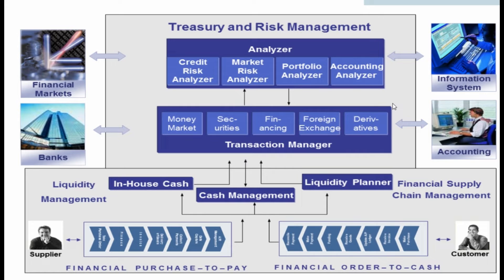From the result database we can generate reports in the Analyzer Information System, called AIS, which displays key figures. We can set up portfolio hierarchies with differentiation criteria unequal to company code, security class, and security account, which enables aggregation of position values on different levels.